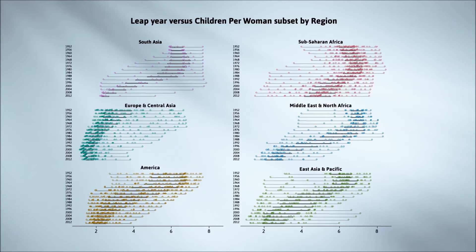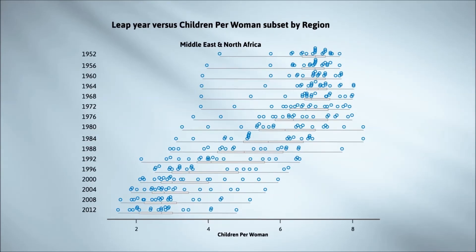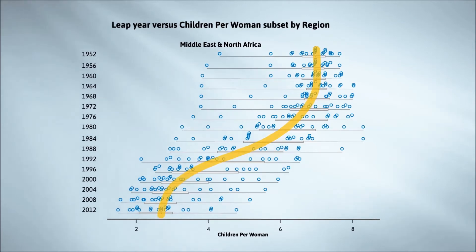I'll start by looking at Middle East and North Africa. There's very little change between 1952 and about 1964 — they're all centered at about the same value, sitting pretty much in a vertical column over the same scale values. But from 1968, the boxes start to shift to the left, to smaller and smaller fertility rates.